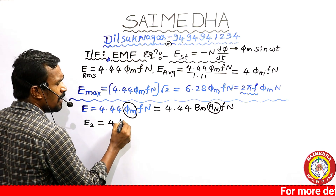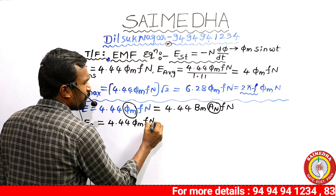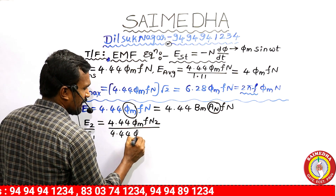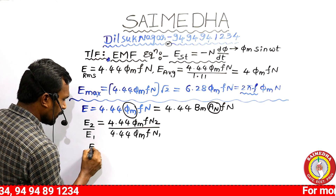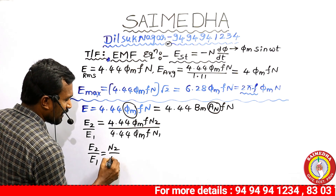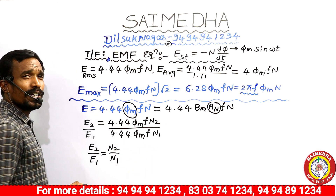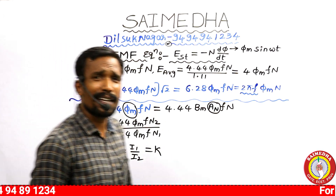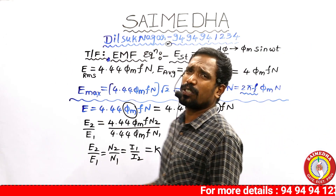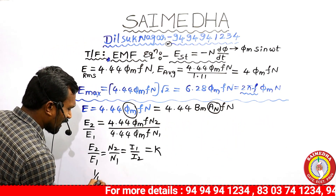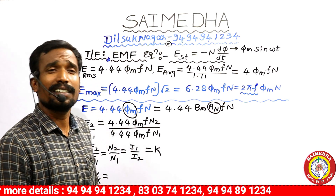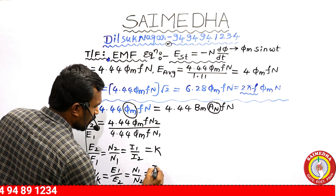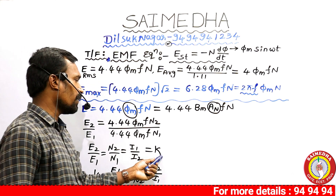The secondary EMF equation is: E2 = 4.44 · Φm · F · N2. The primary EMF equation is: E1 = 4.44 · Φm · F · N1. Therefore: E2/E1 = N2/N1 = I1/I2 = transformation ratio K. At ITI and diploma level: E1/E2 = N1/N2 = I2/I1, which is the turns ratio.